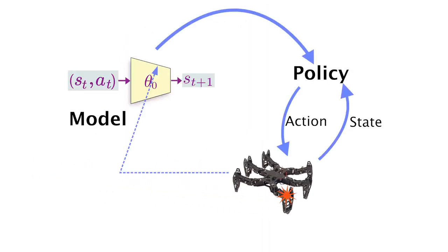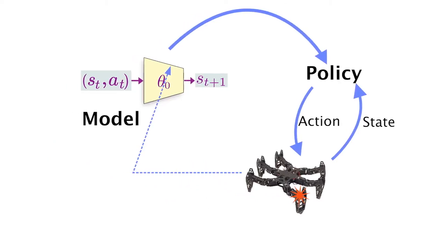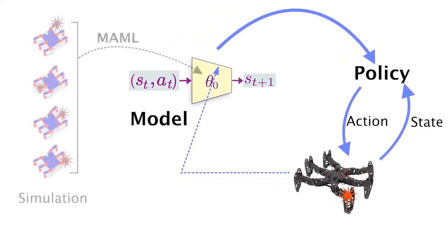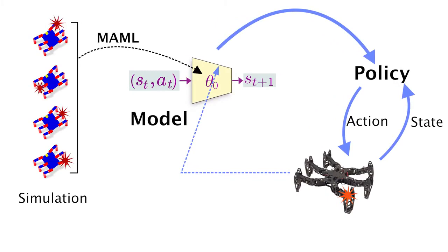To allow a robot to adapt to such situations in a data-efficient manner, model-based reinforcement learning is a promising approach. To make the model learning data-efficient for complex robots, a meta-learning algorithm such as model-agnostic meta-learning might use data from simulations of various situations to pre-train the initial parameters of the model in such a way that the model can be adapted to similar situations using only a few gradient steps.